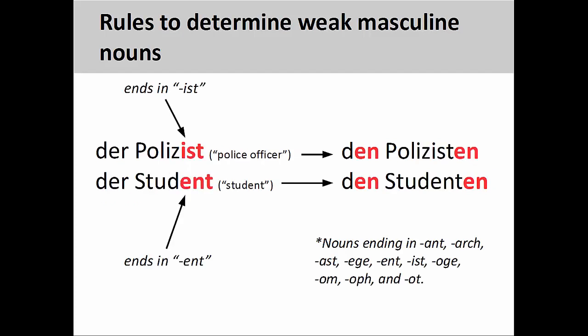Finally, masculine nouns with certain Latin and Greek endings may be weak masculine nouns. These endings include -ANT, -ARCH, -AST, -EGE, -ENT, -IST, -OGE, -OM, -OPH, and -OT. According to this rule, the nouns der Polizist — police officer — and der Student — the student — are weak masculine nouns.